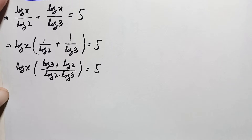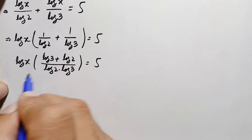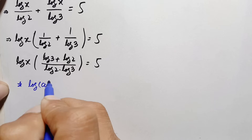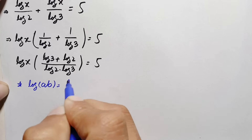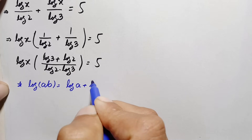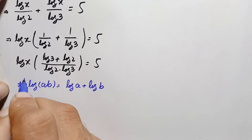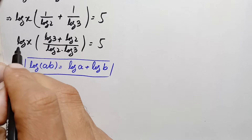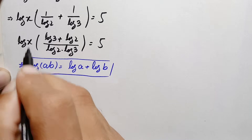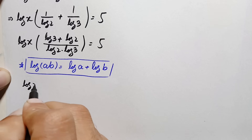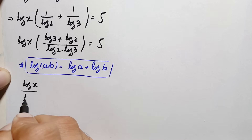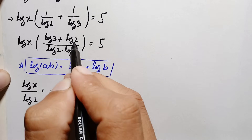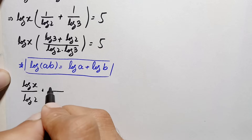In the numerator of the left hand side, we use the logarithm property log(a times b) = log a + log b. So log of 3 plus log of 2 becomes log of 6. The left hand side becomes: log of x times log of 6, divided by (log of 2 times log of 3), is equal to 5.